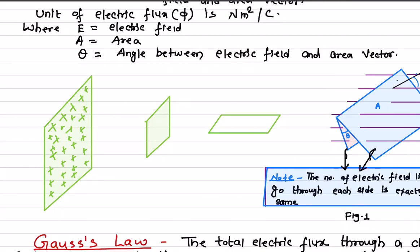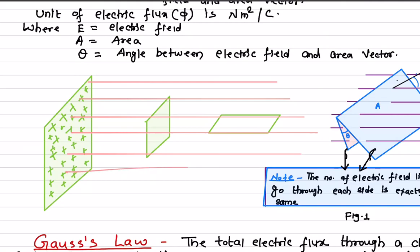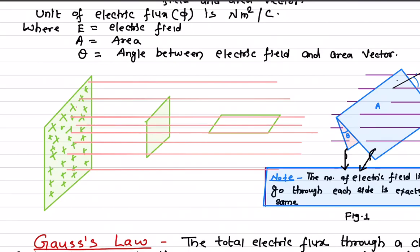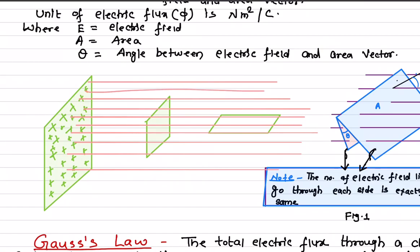We are now interested in calculating what is the electric flux through each of these areas. First, let's draw the direction of the electric field. Due to this charge, the electric field is perpendicular to the area, and because of the positive charge, it is directed away from the charged plate.